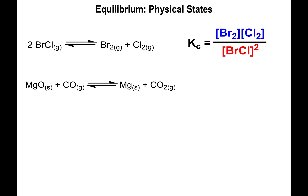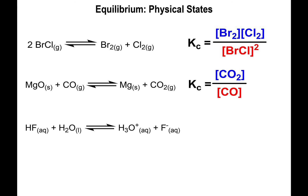The only product that appears in the expression is CO₂(g), and the only reactant that appears is CO(g). So the equilibrium expression is simply [CO₂] / [CO]. Mg(s) and MgO(s) should not be present in the expression.